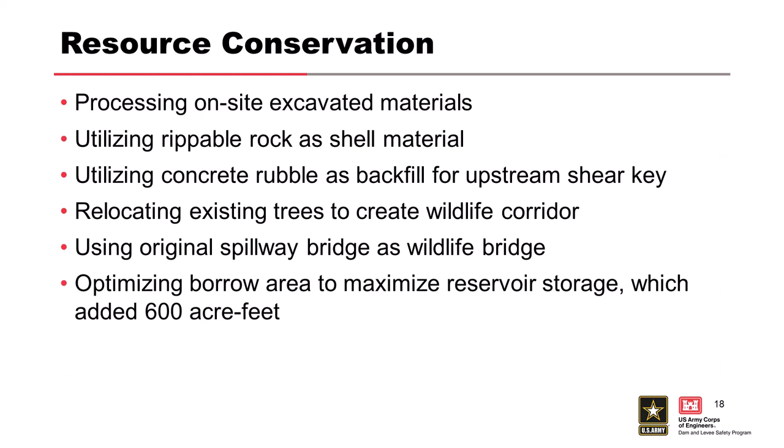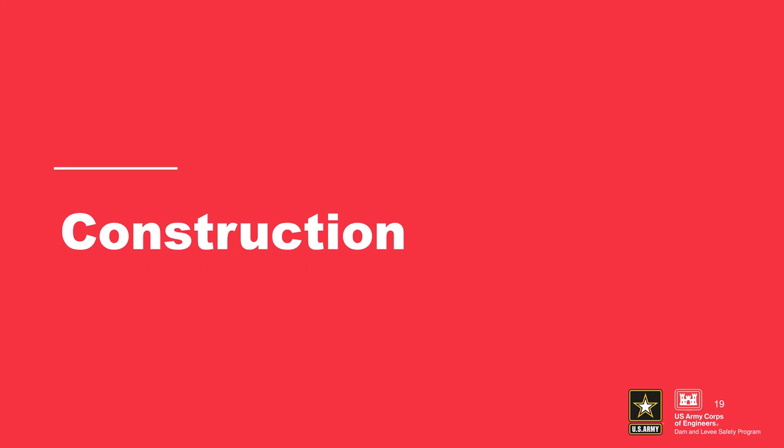For resource conservation, on-site excavated materials were processed for reuse. The existing spillway concrete rubble was used in the shear key. Environmental mitigation included relocating trees and providing a wildlife corridor. The existing spillway bridge was salvaged, and a wildlife bridge was required because deer had used that route. Gravel was placed on top of the bridge for wildlife passage. An additional benefit was creating 600 acre-feet of storage by excavating the reservoir area.